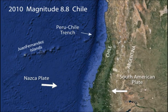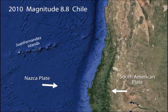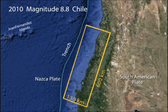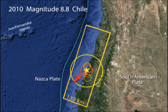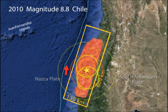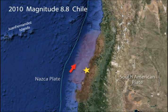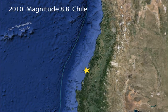The 2010 magnitude 8.8 Chile earthquake tore a rupture zone 600 kilometers long by 130 kilometers wide. Although the rupture began at approximately the same distance from the trench, there was little to no displacement at the trench as there was during the Japan earthquake. So what generated the local tsunami that resulted in 123 deaths and produced major damage in coastal towns?